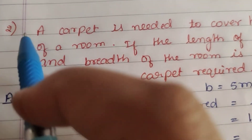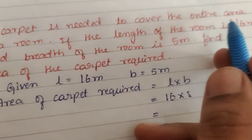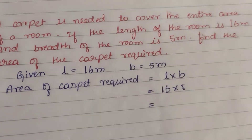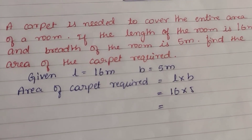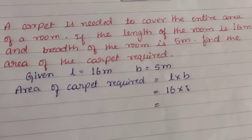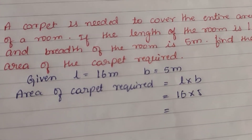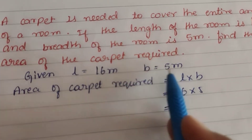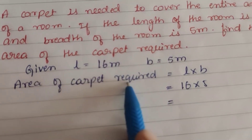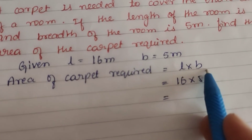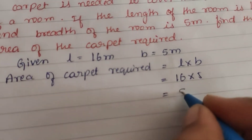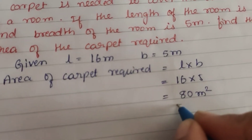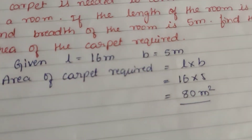Second problem: A carpet is needed to cover the entire area of the room. If the length of the room is 16 meter and the breadth of the room is 5 meter, find the area of the carpet required. Given: length is equal to 16 meter, breadth is equal to 5 meter. Area of the carpet required is equal to length into breadth, that is 16 into 5. Sixteen fives are 80 square meter. So the area of carpet required is 80 square meter.